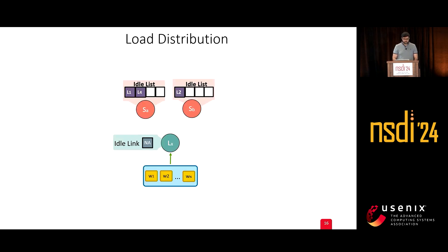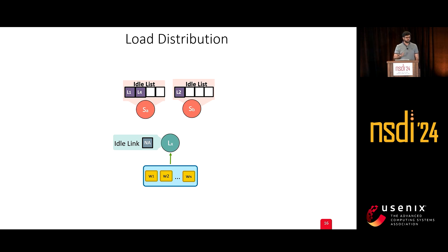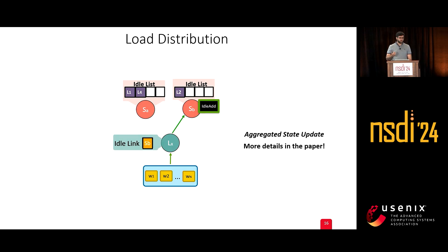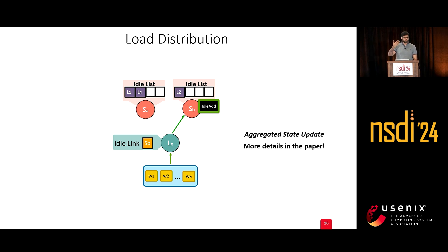In the paper, we also discuss how to distribute state and load information from workers to leaf switches to spine switches. The challenge is that distributing state to all switches on every change incurs significant processing overhead and bandwidth. Instead, we propose aggregated state updates at each switch, where loads are aggregated together and sent to upper-layer switches only when the switch decides the time is right.